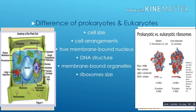Cytoskeleton: this is a multi-component system in eukaryotes composed of microtubules, actin filaments, and intermediate filaments. It is required for maintaining cell shape, providing internal organization and mechanical support. It is also paramount in movement and cell division.